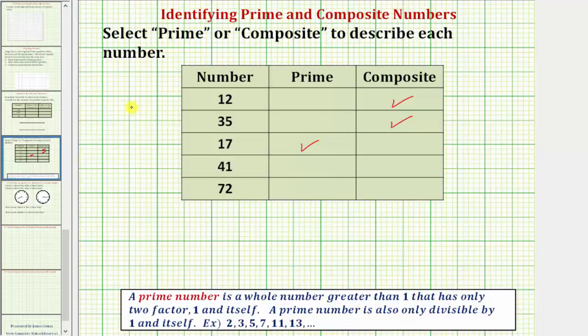Next we have forty-one. We know that one times forty-one is equal to forty-one, but we're looking for a different product involving whole numbers that would be equal to forty-one. And once again there isn't. Forty-one only has two factors, one and itself, and therefore forty-one is prime.